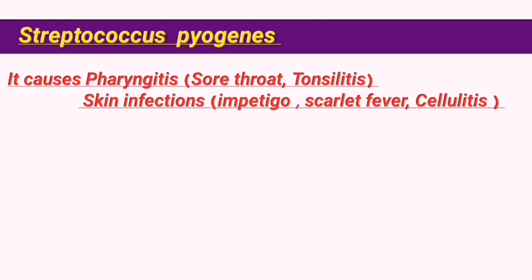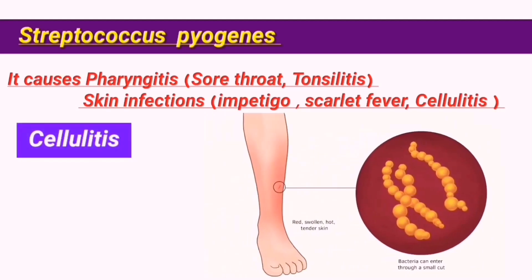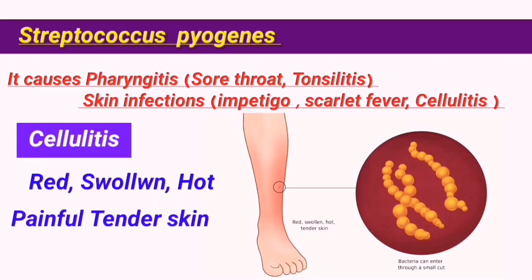If an infection becomes severe enough that it penetrates the skin's tissues, it can cause a disease known as cellulitis, which is a result of inflammation of the subcutaneous tissues. It leads to red, swollen and tender skin which is usually hot and painful to the touch.